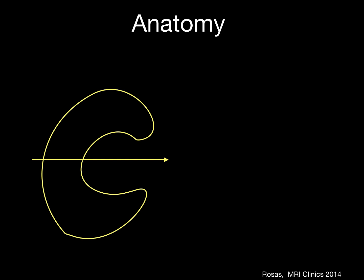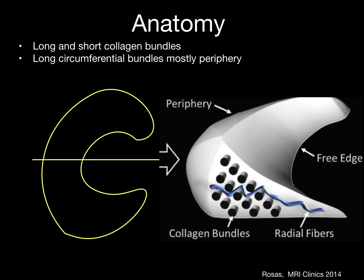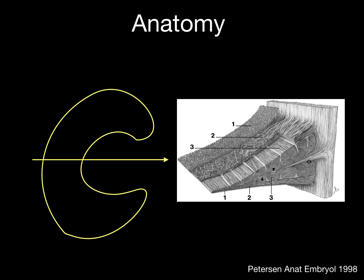Some anatomy of the meniscus that can help understand tears: there are long and short collagen bundles. The long circumferential bundles are mostly peripheral while the short radial fibers tie these together. Histologically it's more complex than this, but for our purposes the simpler approach is what we need.